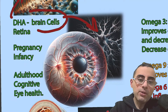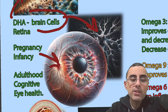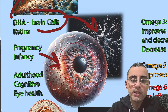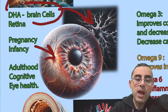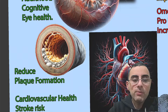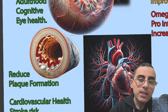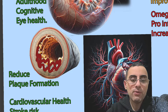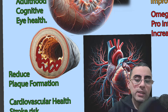Omega-3 is also important to create neurons and for the retina, making it important for our vision. Omega-3 improves cognitive function in adults and older adults especially, and is also important for eye health.